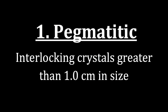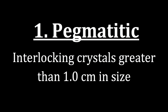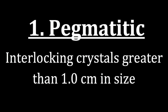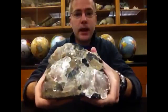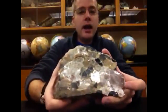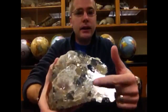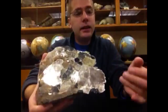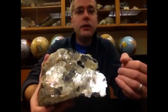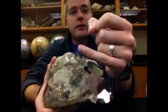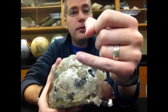When we look at textures, we're going to see several different ones, starting with pegmatitic. Here we're looking at interlocking crystals that have a size greater than one centimeter. To help this make sense, we look at a rock and can see different minerals making it up — light colors, dark colors — and very large crystals. To give perspective, one centimeter is about the size of the average adult's pinky fingernail.